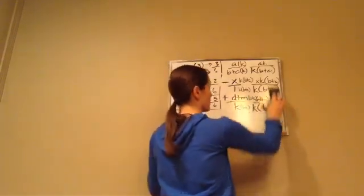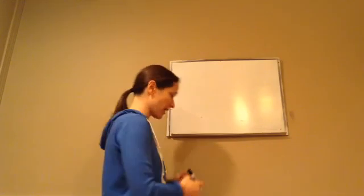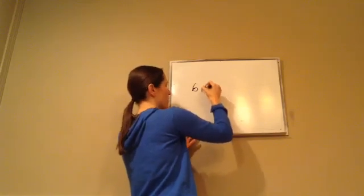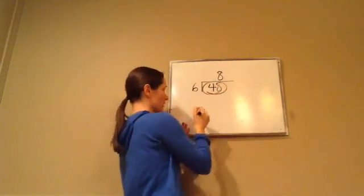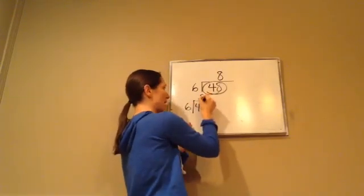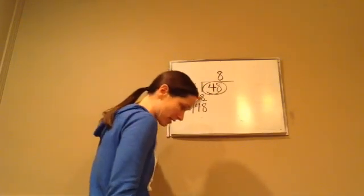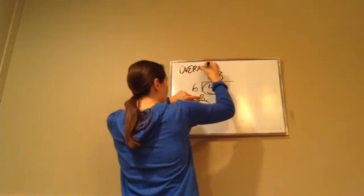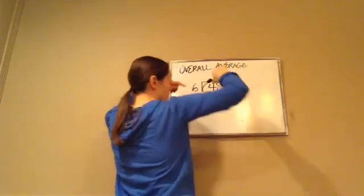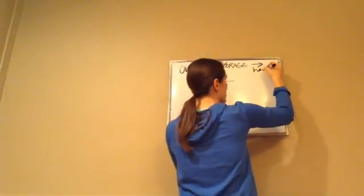Now we're moving on to overall average. When you're working with overall average, you have to know the sum. If the average of the first six numbers is eight, that means six times eight equals forty-eight — so the sum had to be forty-eight. The sum is the most important thing you need to know.